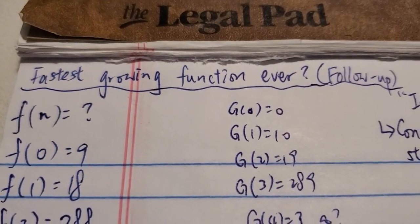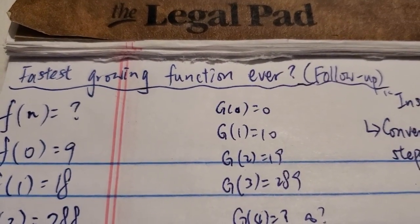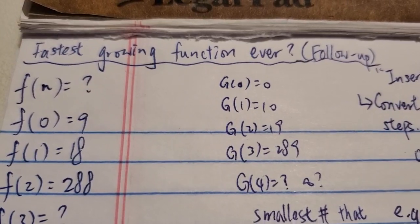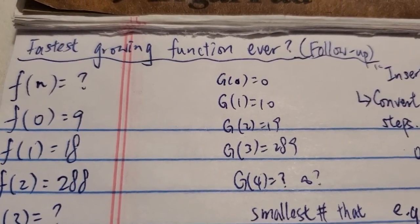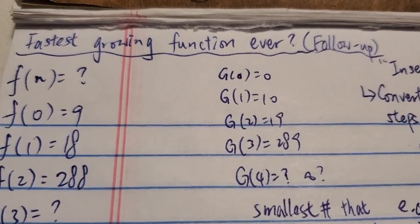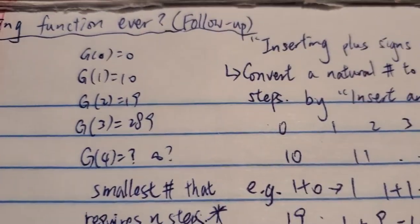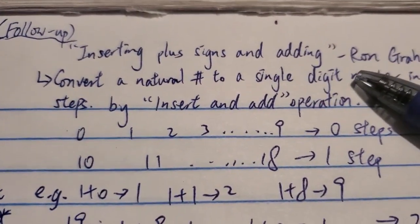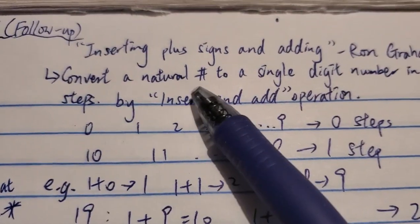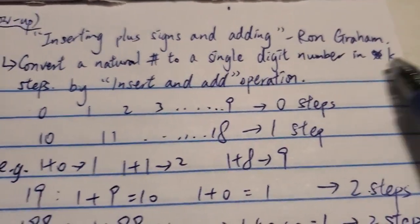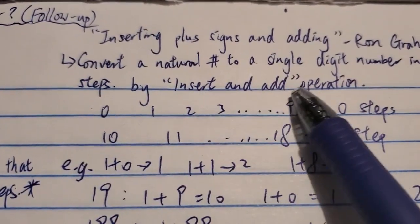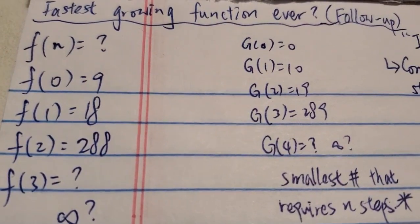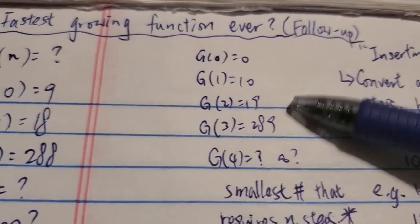Hi everyone. Today I'm going to talk about the fastest growing function ever. This is actually a follow-up video on another video I made a while ago, which probably has the same title, and it's from Ron Graham. It's about inserting plus signs and adding. Basically the idea is to convert a natural number to a single-digit number in k steps using the insert-and-add operation. Feel free to watch that video first, because I'm not going to explain too much about this operation.